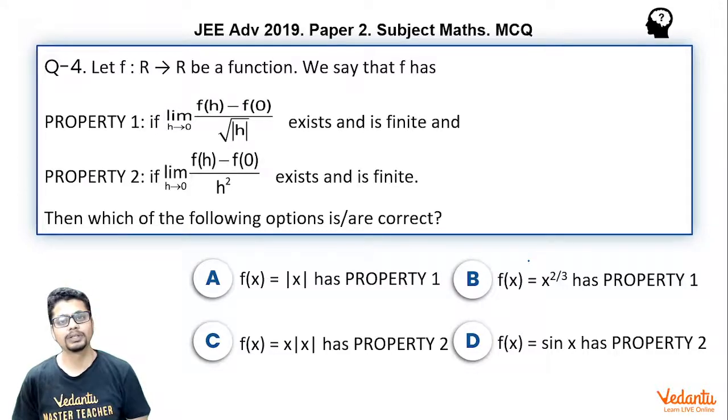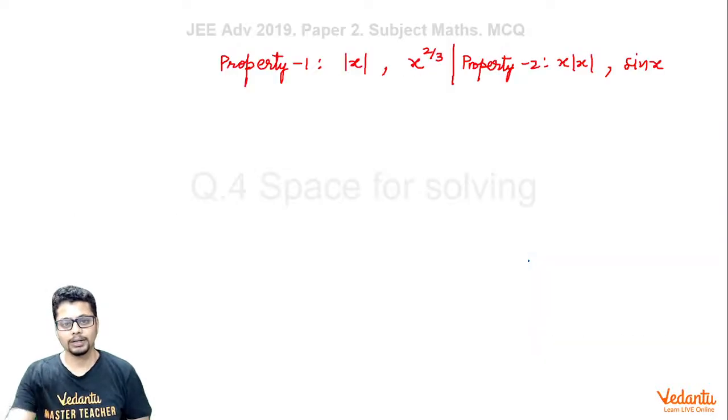There are four options. It is a multiple correct type question. Let's explore. We are concerned about two functions: |x| and x^(2/3), whether they have Property 1 or not, and two other functions: x|x| and sin x, whether they have Property 2 or not. This is a simple question based on basics of limits. Let's do it.